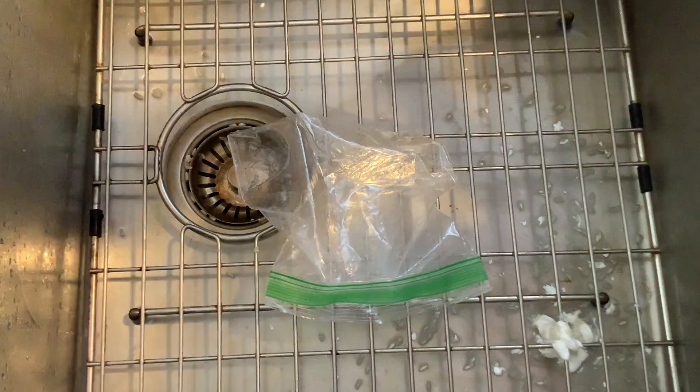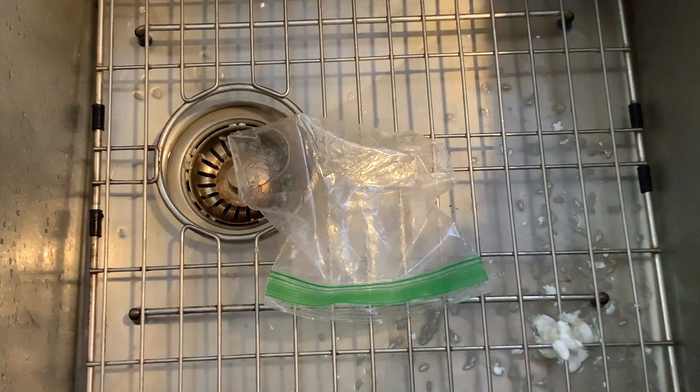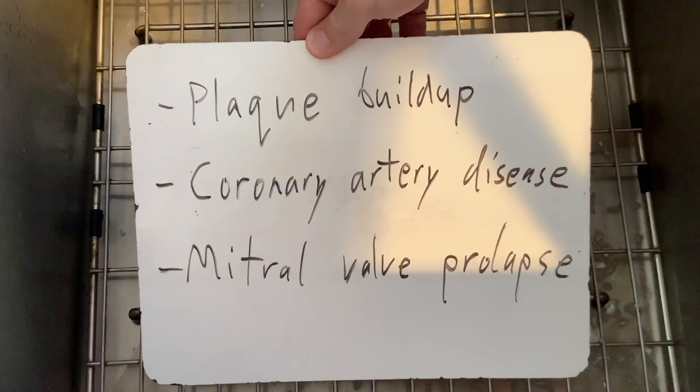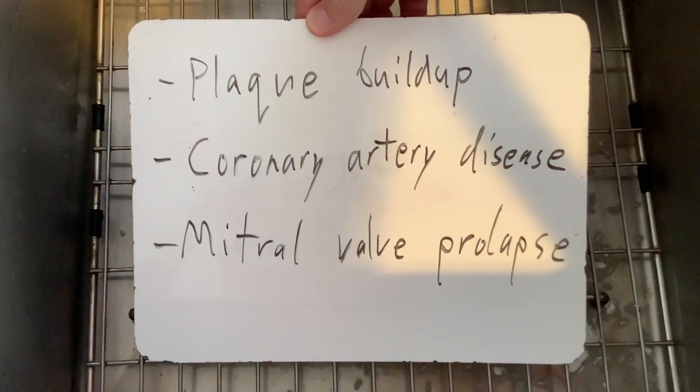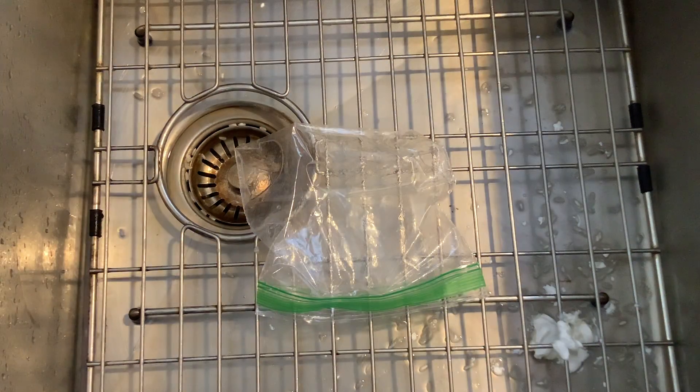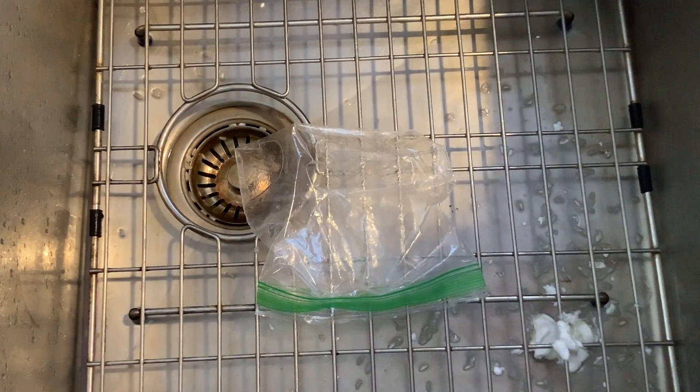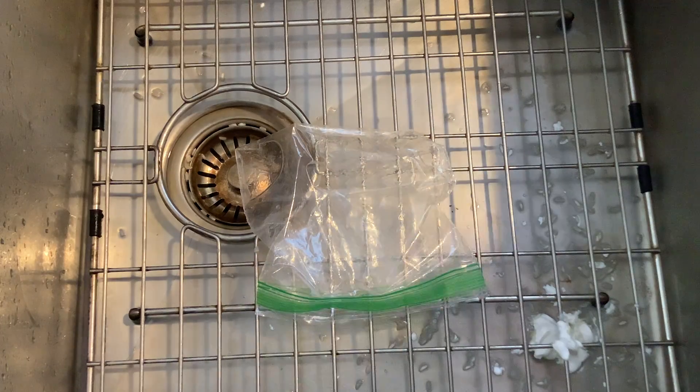Okay, so just film those three activities. And as you're filming, please tell me which of the three you think each one represents. Which activity represented plaque buildup, which one represented coronary artery disease, and which one represented mitral valve prolapse. Please make sure to do this over a sink, try not to get water everywhere, and remember to clean up after yourself afterwards. Thanks.